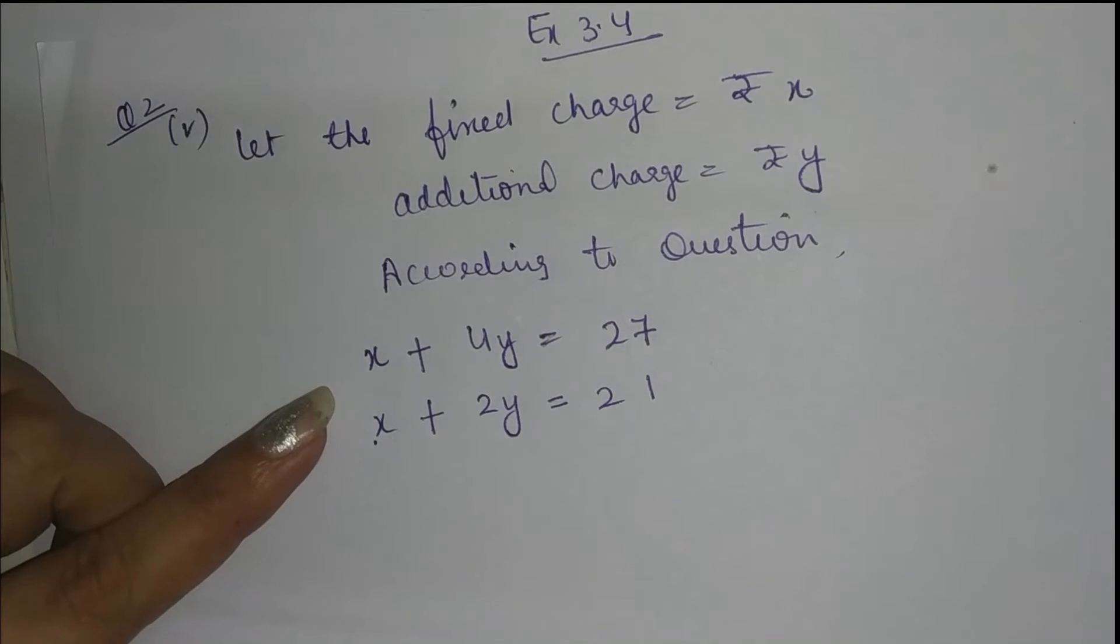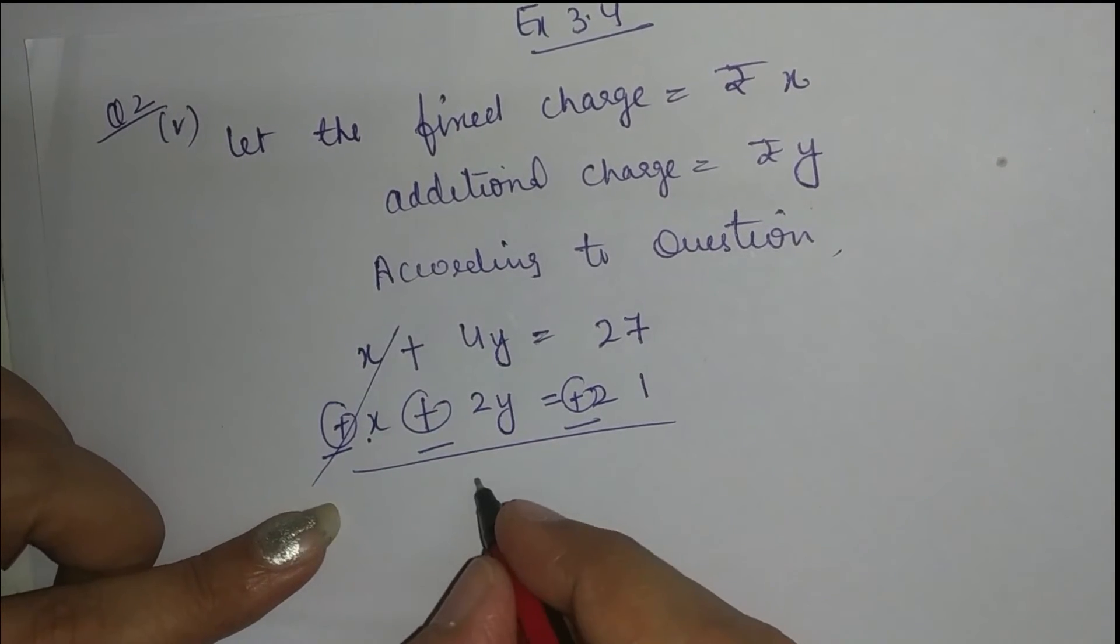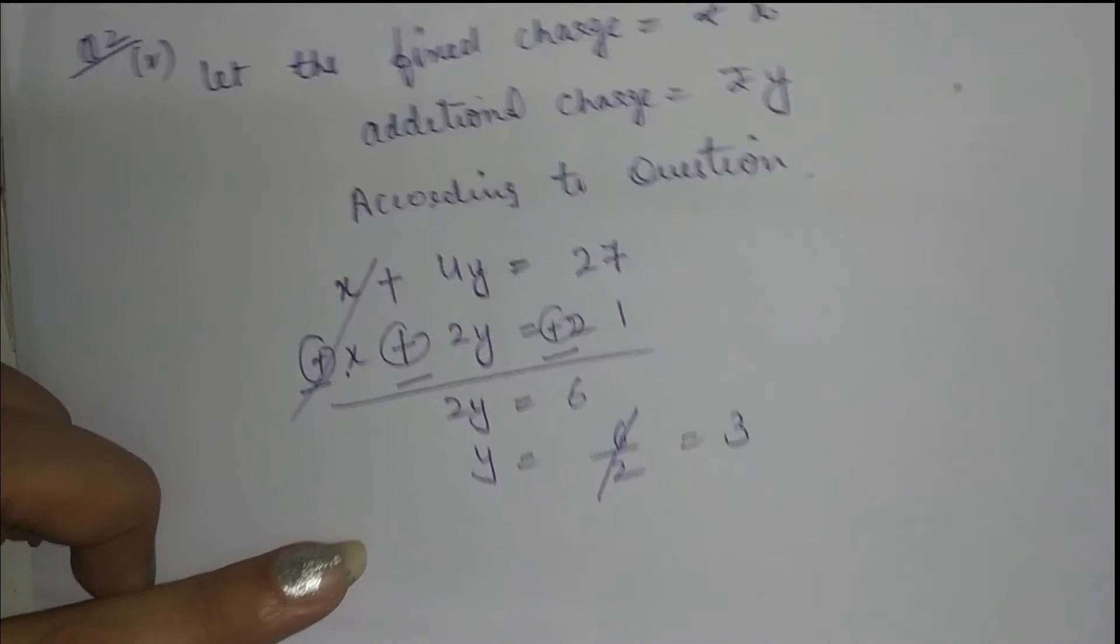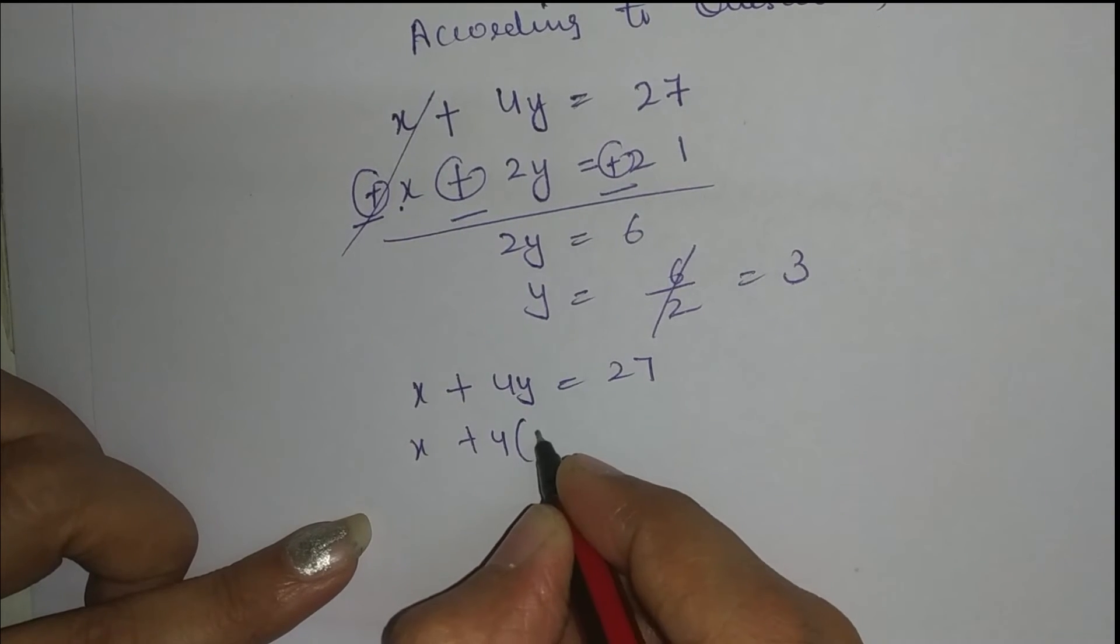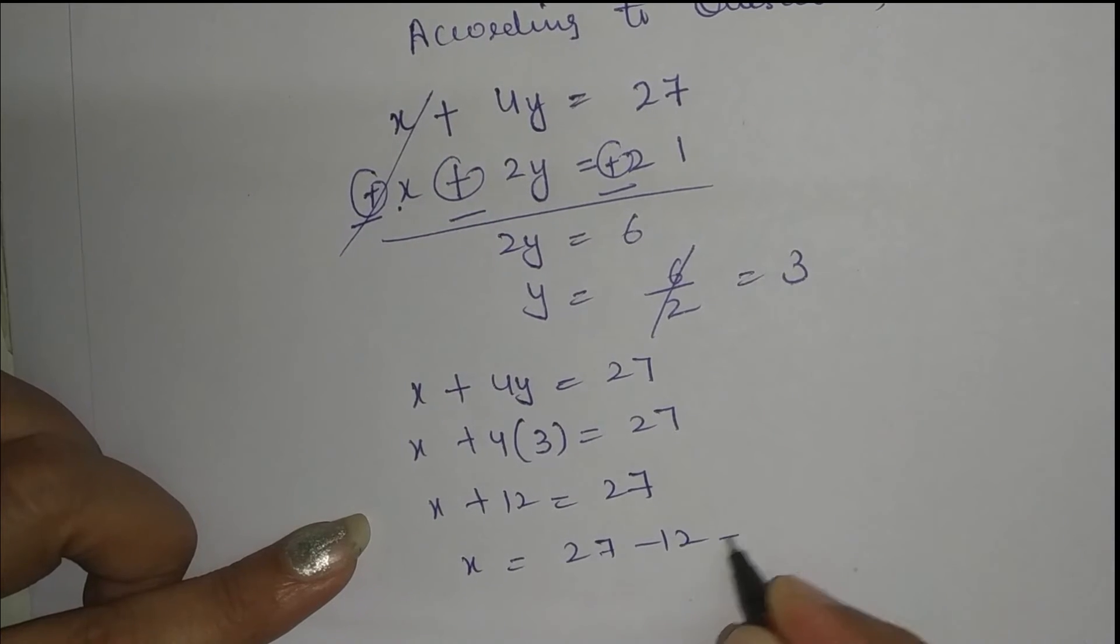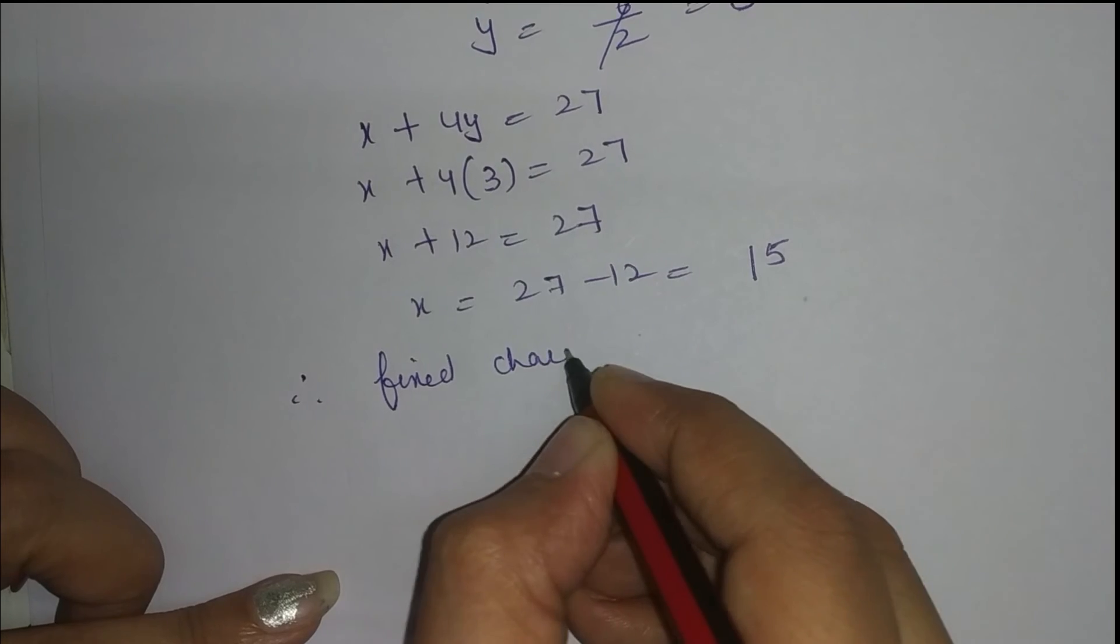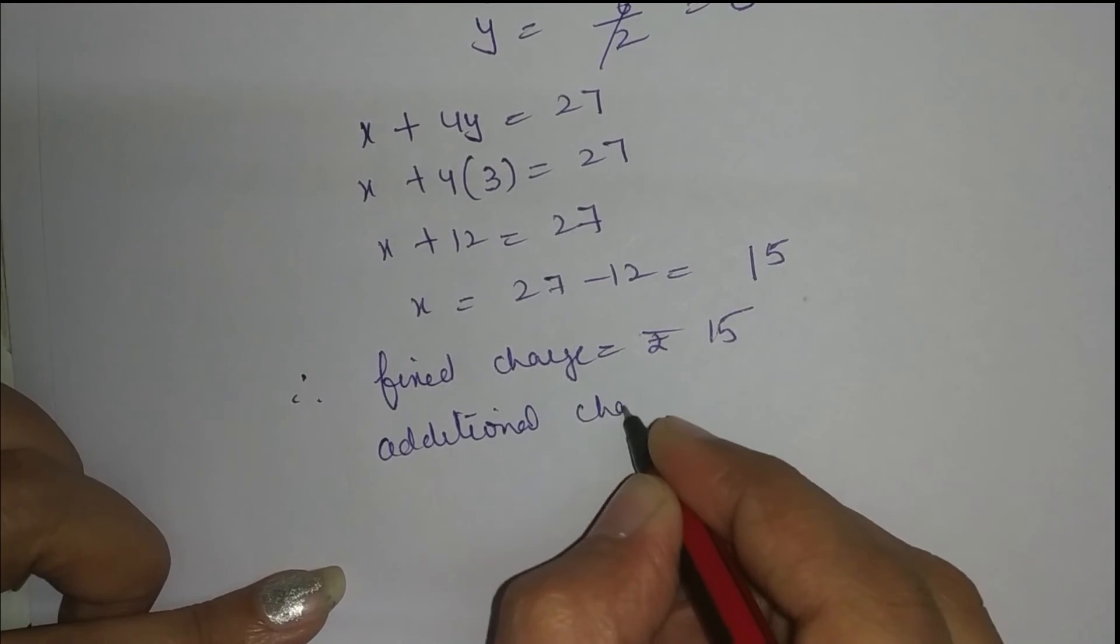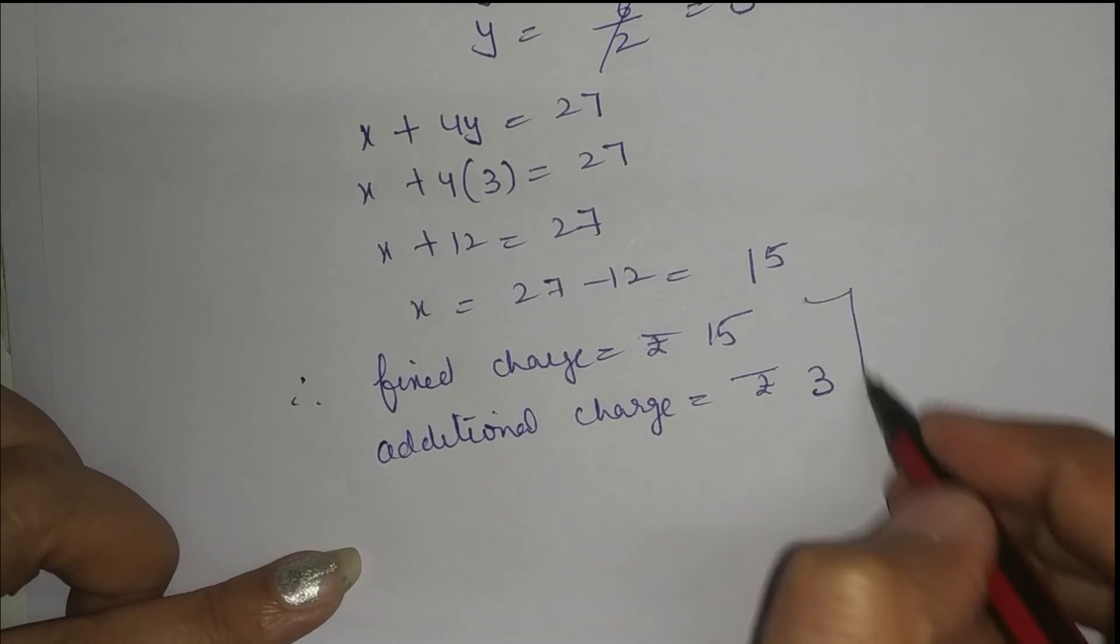By elimination method, we don't have to do anything, directly we will minus. This will be cut, here we have 2y, here we have 6, so y of value is 6 upon 2, cutting 3. So y of value is 3. Now x plus 4y equal to 27, I will put y of value, 3 equal to 27, x plus 12 equal to 27, x is equal to 27 minus 12, 15. Fixed charge is equal to rupees 15, additional charge is equal to rupees 3.